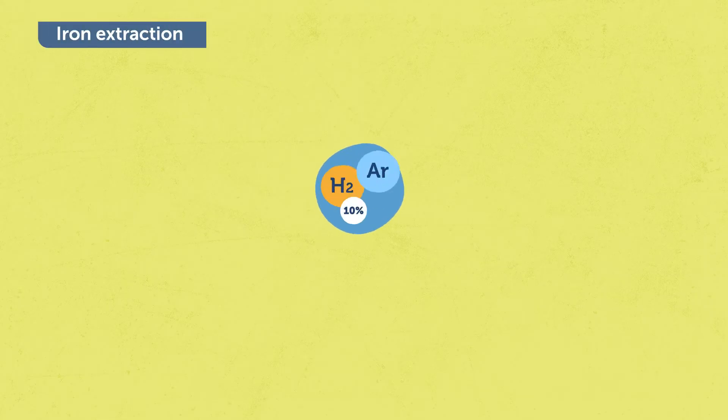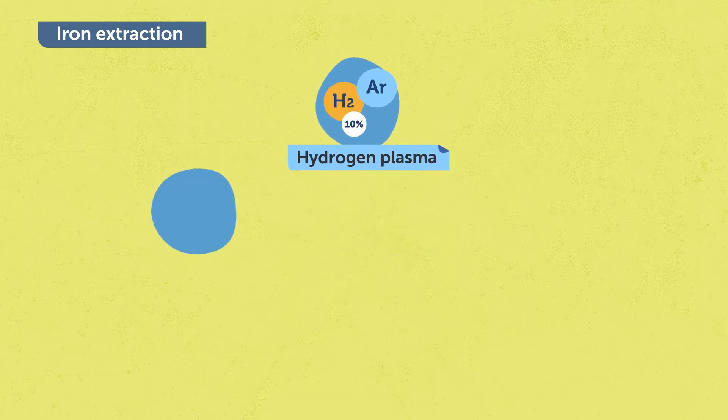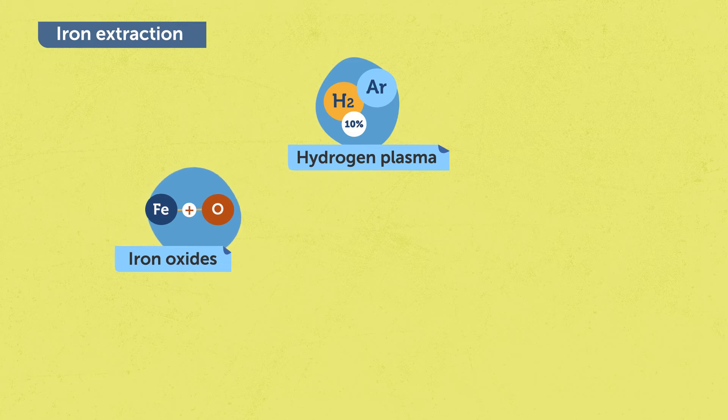To extract iron from red mud, we use hydrogen plasma species as a reducing agent to convert iron oxides that is contained in red mud into metallic iron.